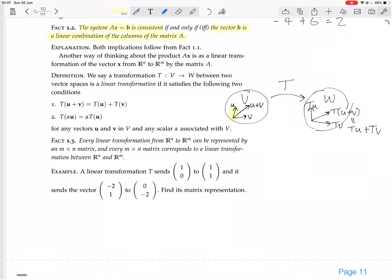You take two vectors, u and v, you add them together in V, you transform it, you get T of u plus v. Or, you take your vectors u and v, you transform them to get T of u and T of v, and then you add them in W to get T of u plus T of v.